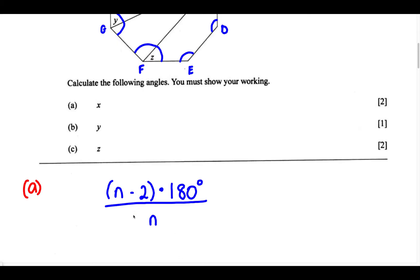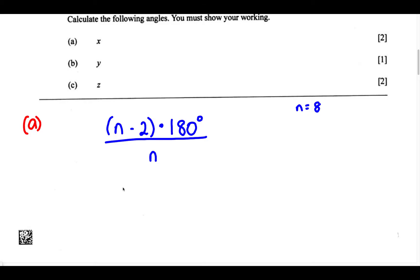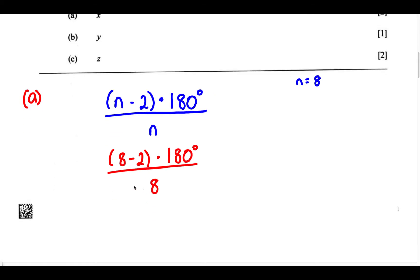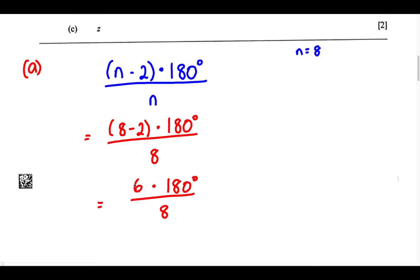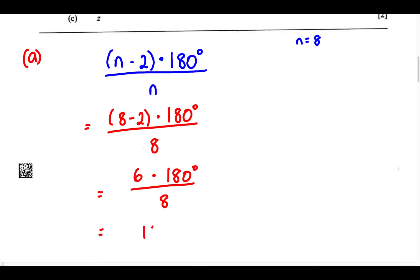N represents the number of sides of the polygon. We're dealing with an octagon, so N equals 8. Substituting 8 for N: (8 minus 2) multiplied by 180 degrees over 8. 8 minus 2 gives us 6 multiplied by 180 degrees over 8. So 6 times 180 degrees divided by 8 gives us 135 degrees.